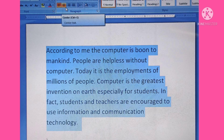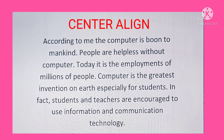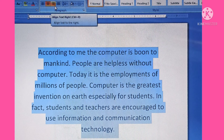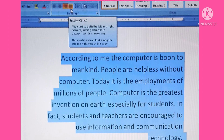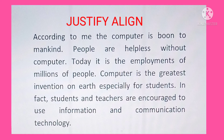If we click on the center align button, the text is centered between the left and right margins in each line, and it is mostly used for titles and headings. If we click on the align text right button, the text is aligned at the right margin, and it is often used for placing dates or references in a document. If we click on the justify button, the text is aligned at both the left and right margins, and it is mainly used for designing books, magazines, and newspapers.